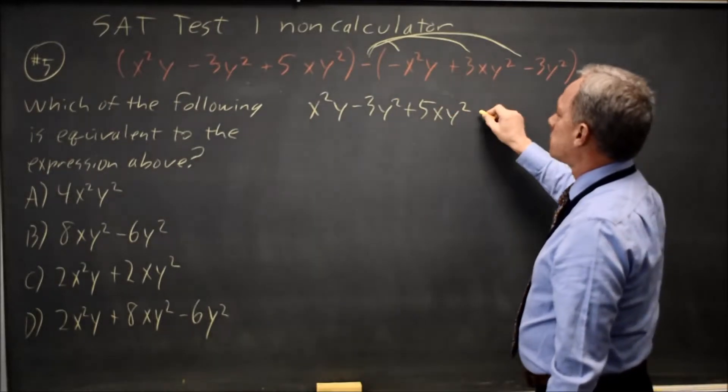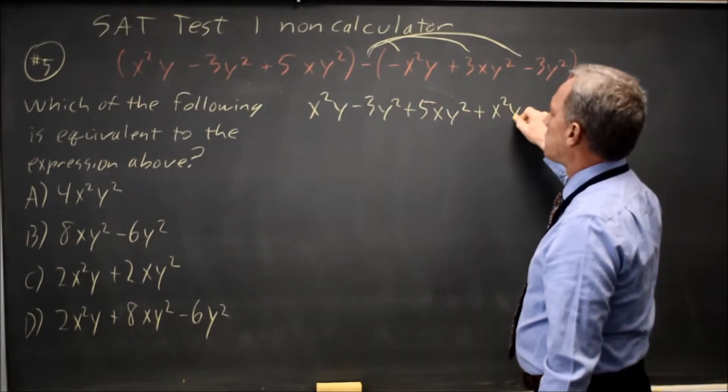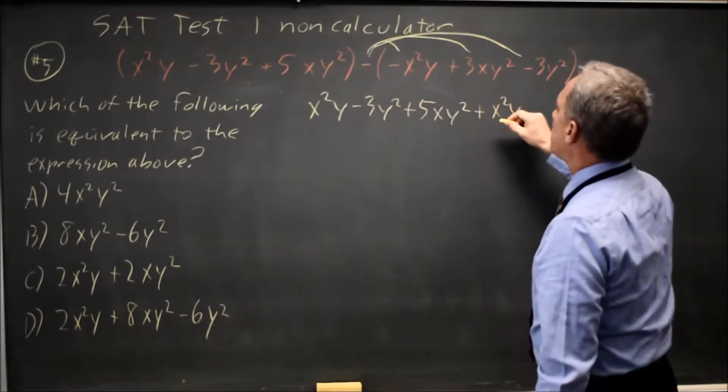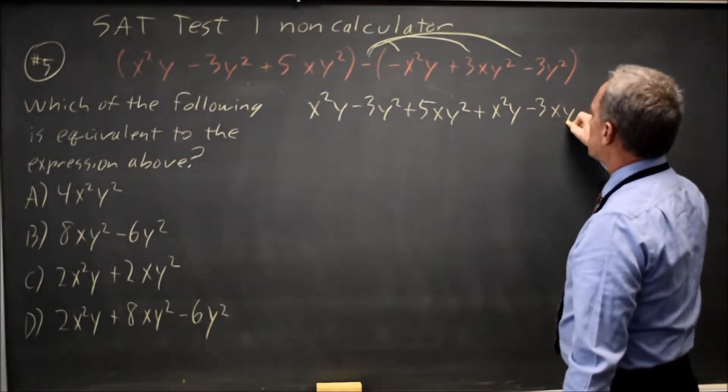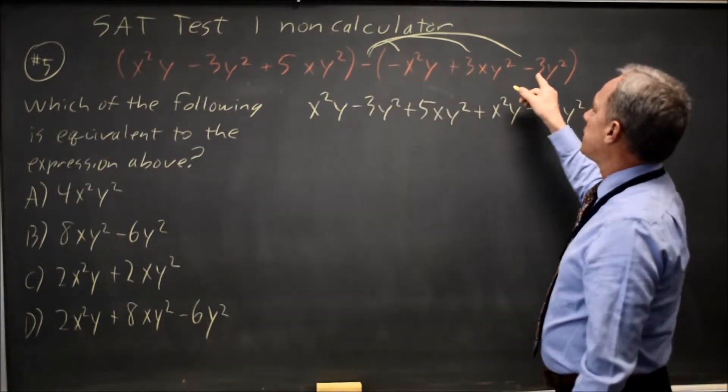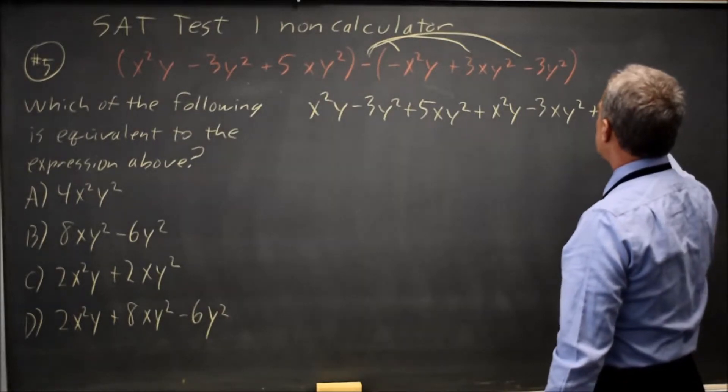Then minus negative x squared y is plus x squared y. Minus 3xy squared is minus 3xy squared. And minus negative is plus 3y squared.